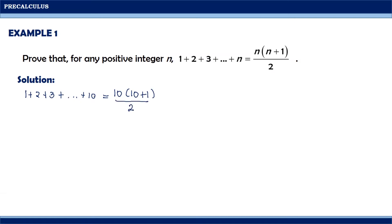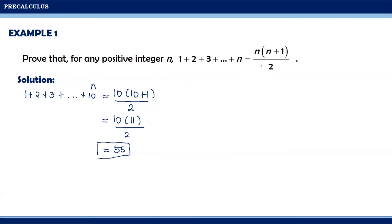Being n equal to 10, when we simplify this, we're going to have 10 times 11 divided by 2, so we will have 55. Meaning, without adding the specific terms, we can actually find the sum using the formula n times n plus 1 divided by 2. However, in this particular example, we need to prove using Mathematical Induction that the given mathematical statement is true.